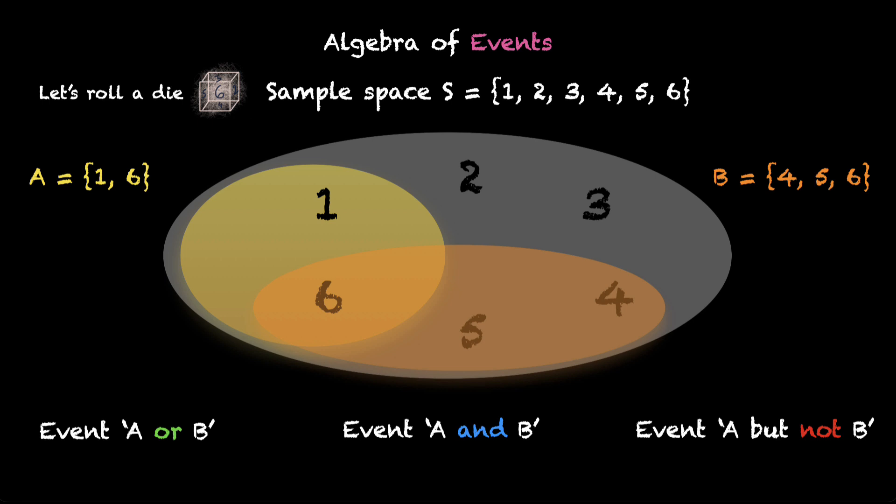Let's look at the first one, event A or B. Event A or B means it's cool with A or B or both. So, as long as either one of them is happening, this event A or B will happen. This means A can happen, or B can happen, or both of them can happen.